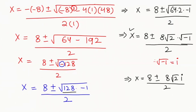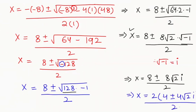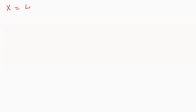Now in the next step I am going to take out a common factor of 2: x equals 2 times (4 plus or minus 4 root 2 iota) over 2. The 2s cancel, so x equals 4 plus or minus 4 root 2 iota.